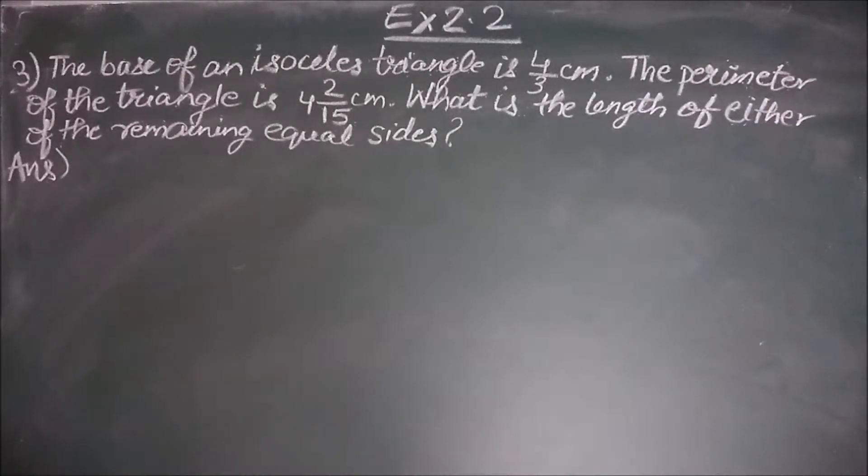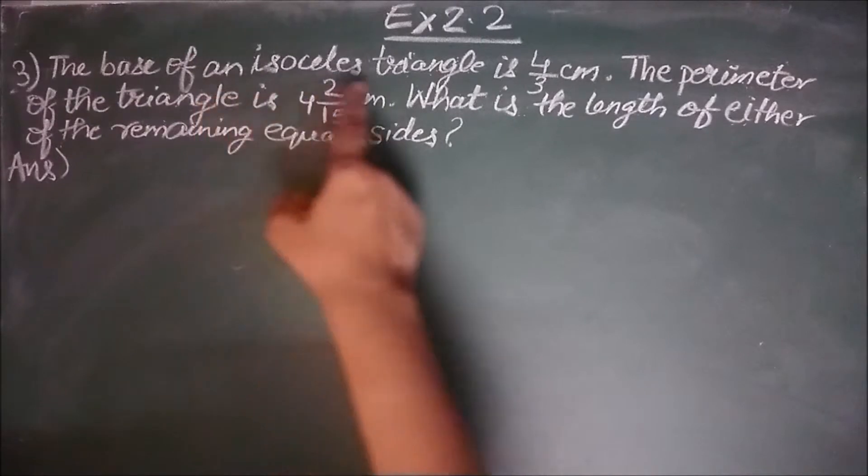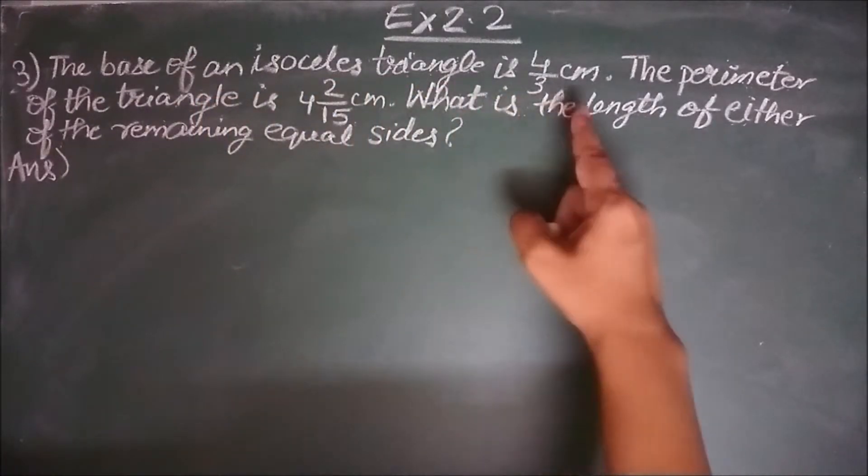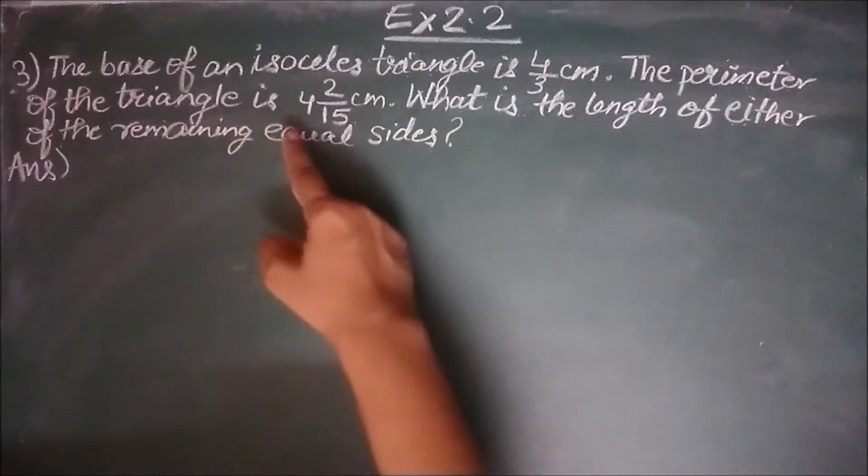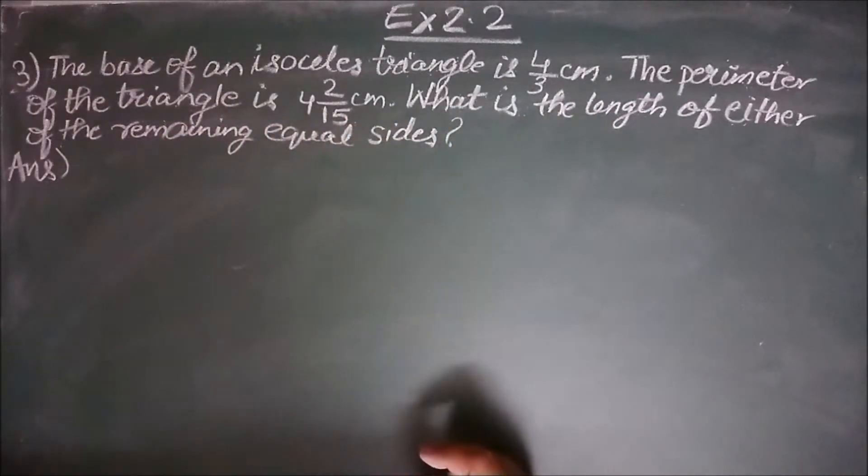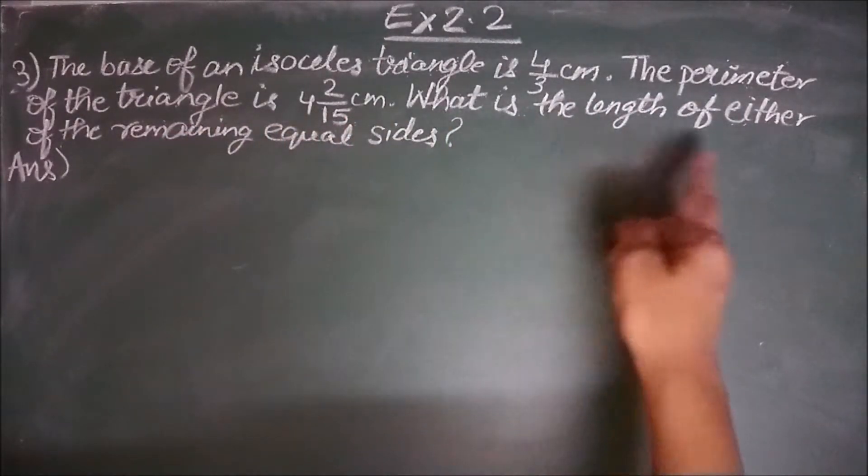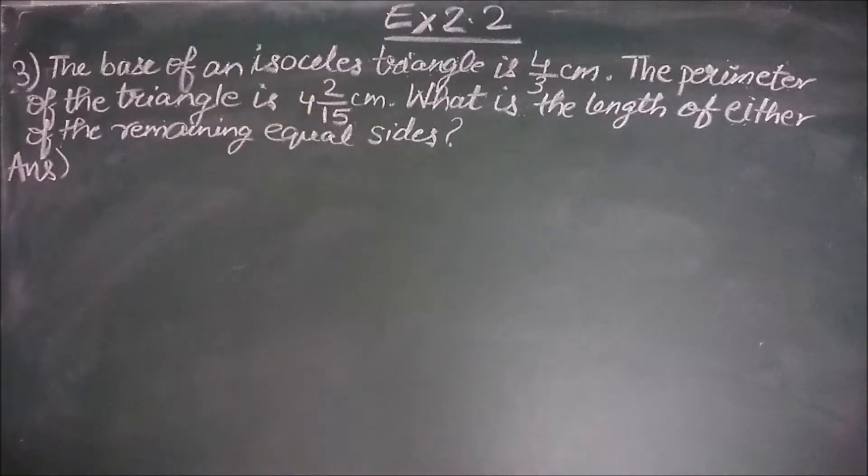Exercise 2.2, question number 3. The base of an isosceles triangle is 4 by 3 cm. The perimeter of the triangle is 4 2 by 15 cm. What is the length of either of the remaining equal sides?